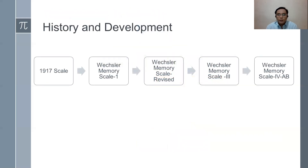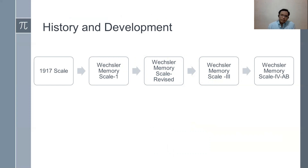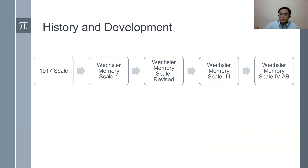In the history and development, the Weschler Memory Scale went through five versions: the 1917 scale, WMS 1, the revised version, WMS 3, and WMS 4. 'AB' stands for abbreviated. The latest memory scale was produced or modified in 2009. Let's begin with the 1917 scale.